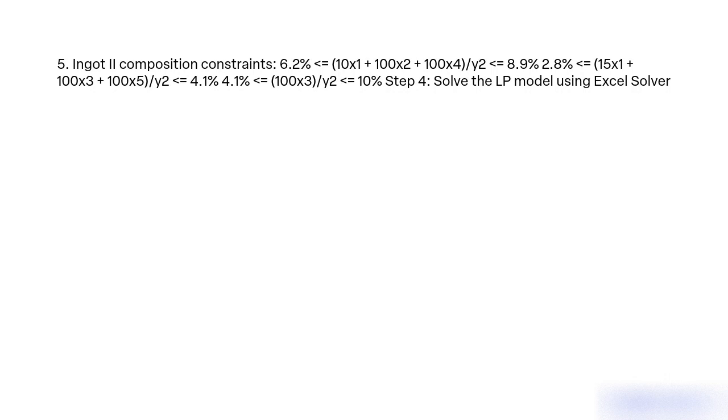4. Aluminum and composition constraints: 6.2% ≤ (10X1 + 100X2 + 100X4)/Y2 ≤ 8.9%, 2.8% ≤ (15X1 + 100X3 + 100X5)/Y2 ≤ 4.1%, 4.1% ≤ (100X3)/Y2 ≤ 10%. Step 4: Solve the LP model using Excel Solver.